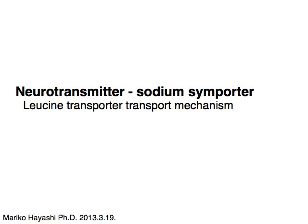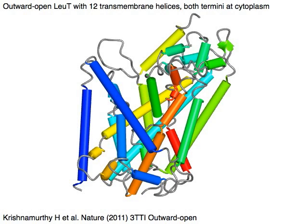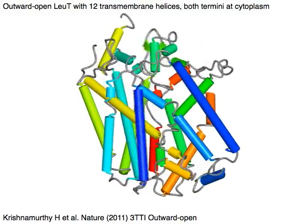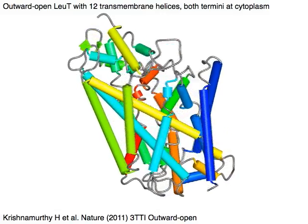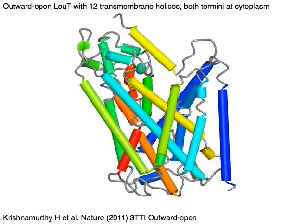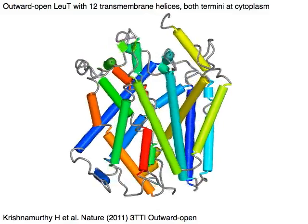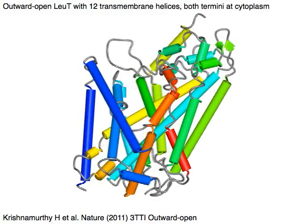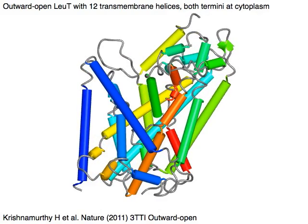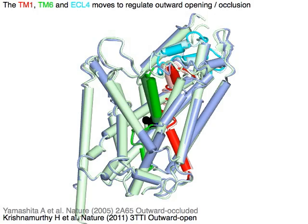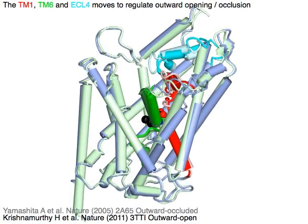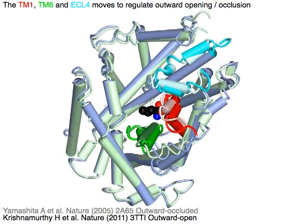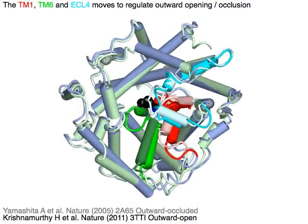Neurotransmitter sodium symporter (NSS) LeuT, a leucine transporter, uses a transport mechanism. The outward-open structure of bacterial leucine transporter LeuT has 12 transmembrane helices, with both termini in the cytoplasm. TM1 in red, TM6 in green, and ECL4 in cyan move to switch the transporter between the outward-open state (shown in blue/primary colors) and the occluded state (shown in green/light colors).